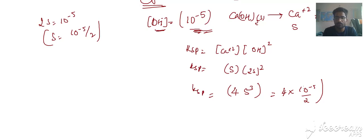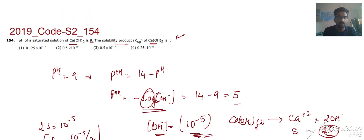Ksp is equal to 4 into 10 power minus 5 by 2, 10 power minus 5 by 2 power 3, which is 4 into 10 power minus 15 by 8. So it is nothing but 0.5 into 10 power minus 15.